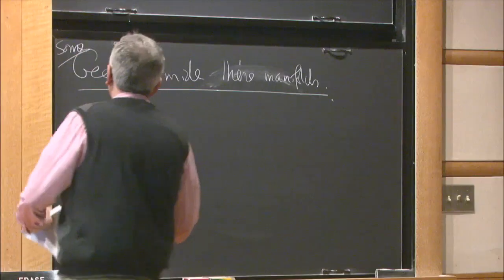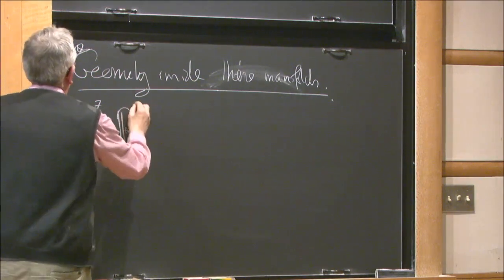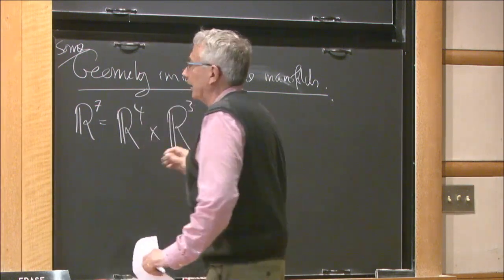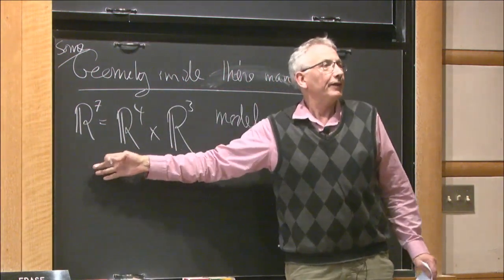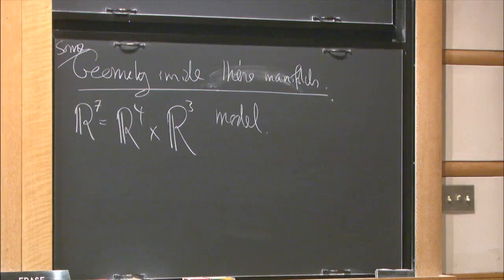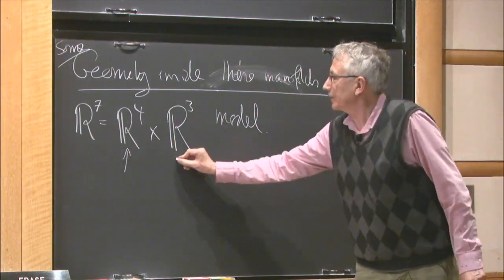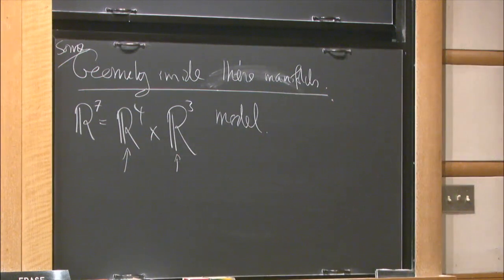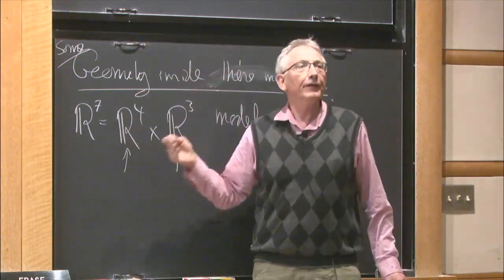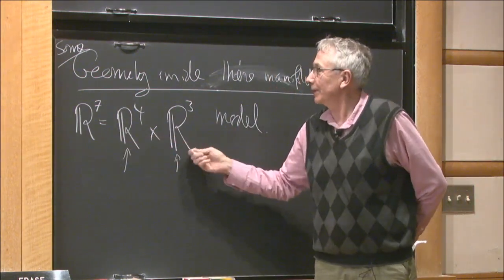I won't really take the time to recall that fully, but going back to our model, remember R7 = R4 × R3. We wrote down a model 3-form in terms of a splitting like this. If you have such a splitting, then this subspace is called co-associative and this subspace is called associative. Any 4-dimensional subspace equivalent under the action of G2 to the co-associative one is called co-associative, and similarly for the associatives.